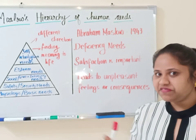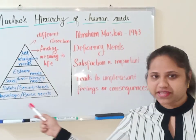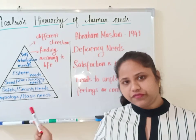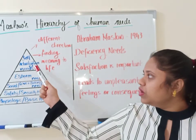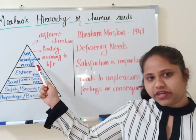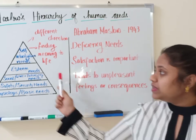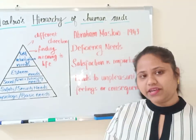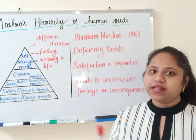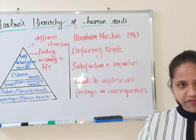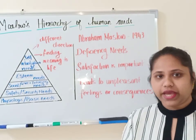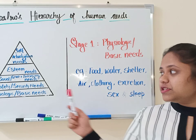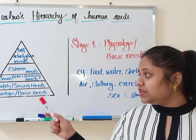Maslow designed this five-stage model to describe that these four needs are very basic needs required by a human being. When these basic needs are fulfilled, only then can a person approach the more complex need at the topmost layer of the pyramid — that is self-actualization. When a person moves to the self-actualization aspect, that means he has found a meaning to his life, and as every individual is unique he can move in a different direction.